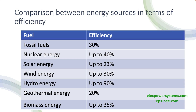Wind energy is a renewable energy source that uses turbines to generate electricity from the wind. The efficiency of wind turbines varies depending on the location and the size of the turbines, but the average efficiency of modern wind turbines is around 30 percent. The advantage of wind energy is that it is clean and renewable, but the disadvantage is that it is dependent on the availability of wind.